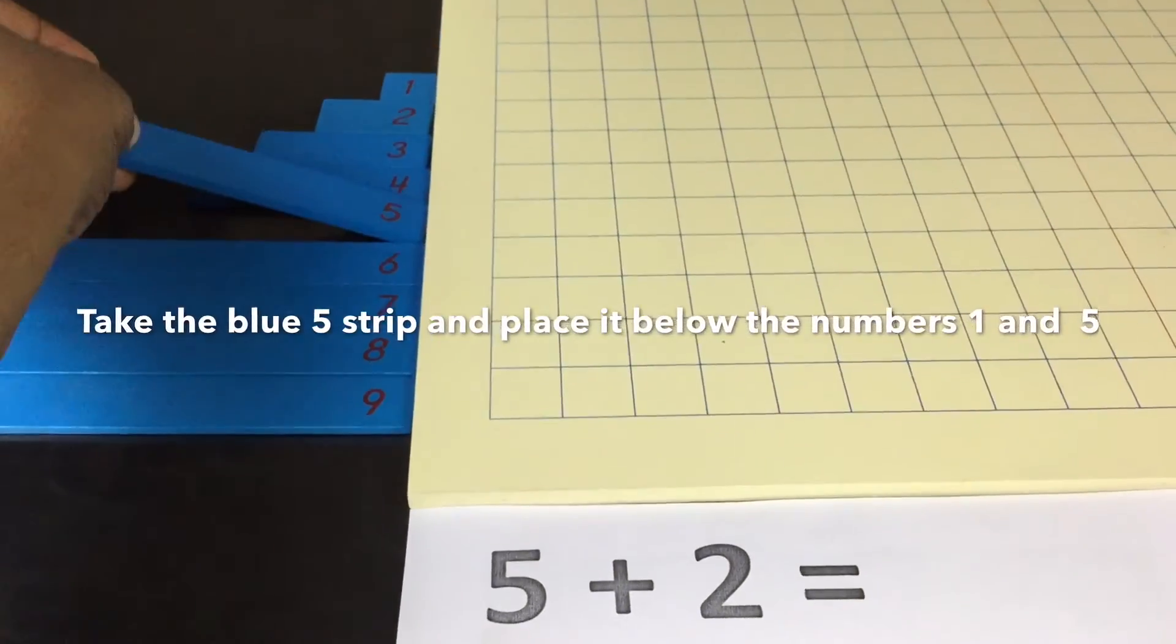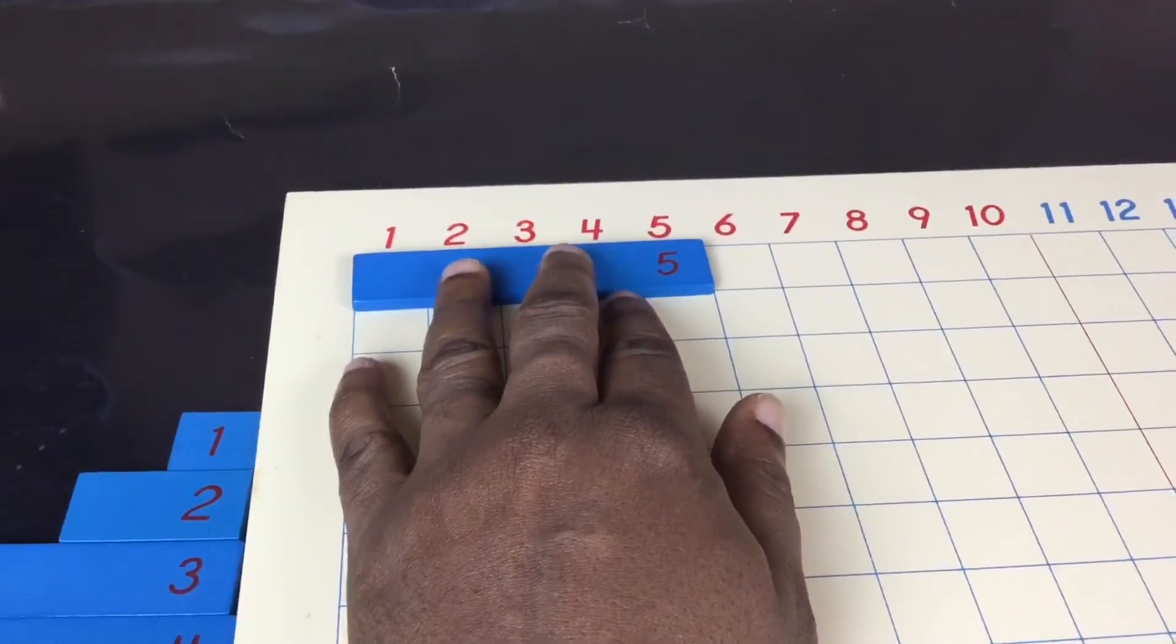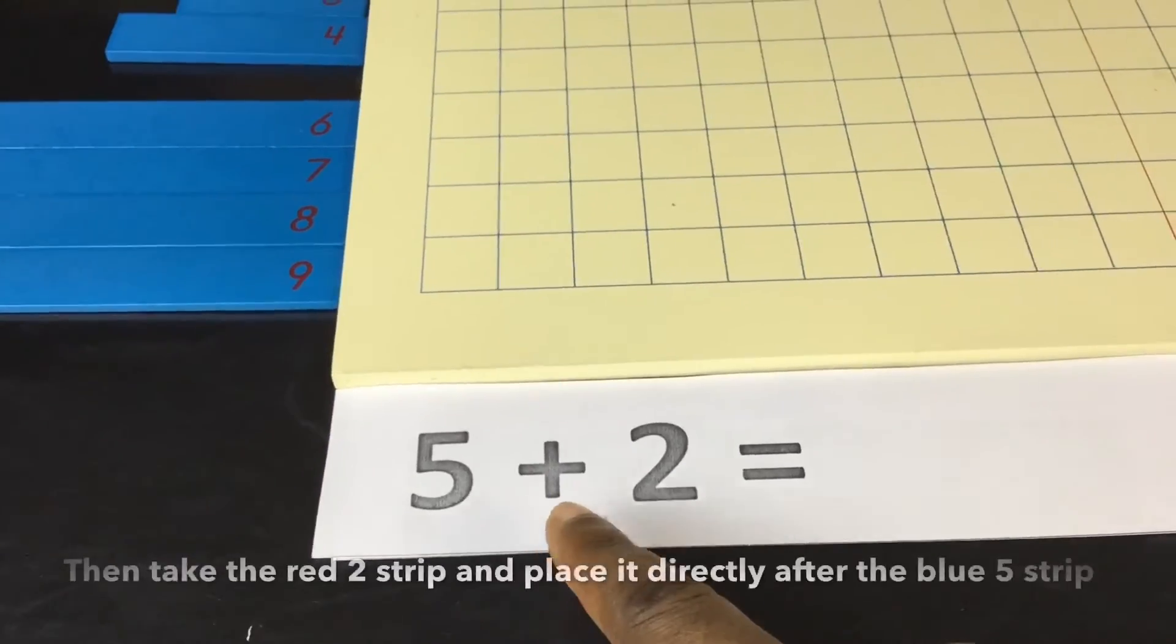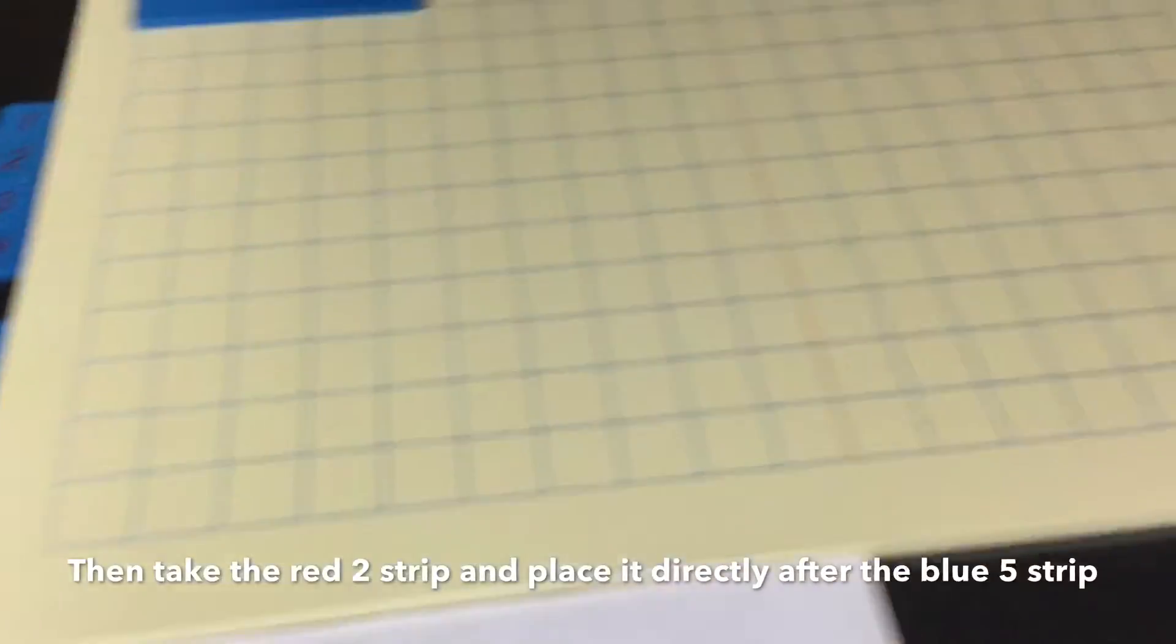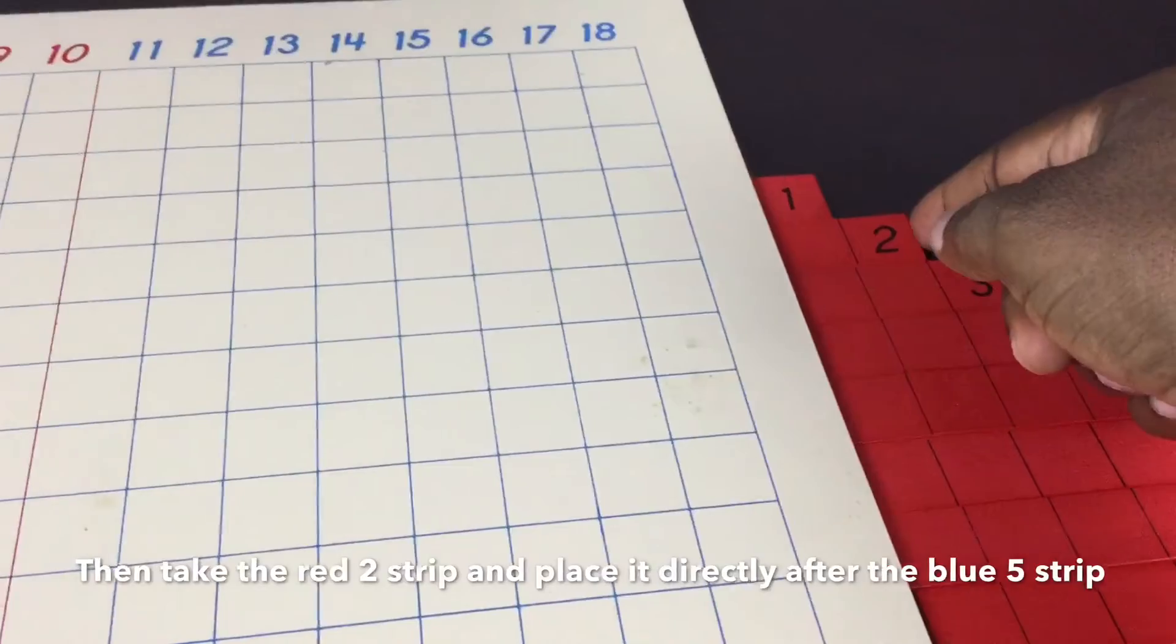Take the blue five strip and place it below the numbers one to five. Then take the red two strip and place it directly after the blue five strip.